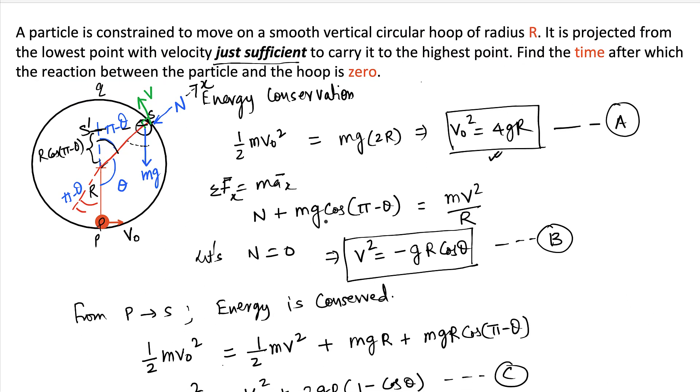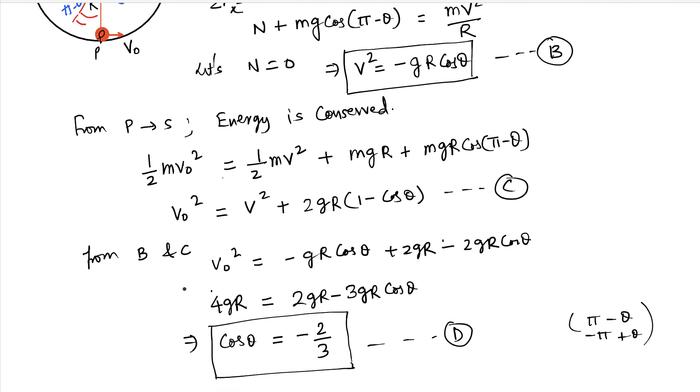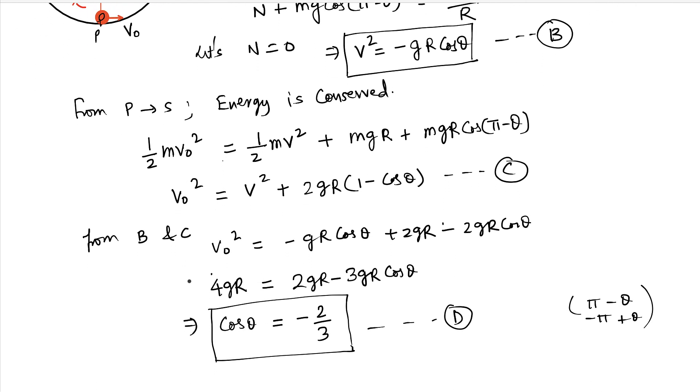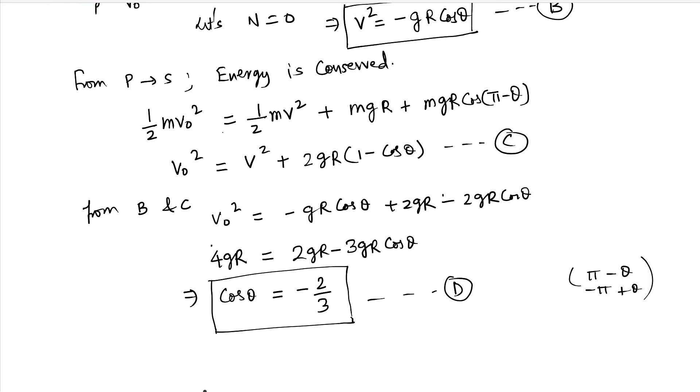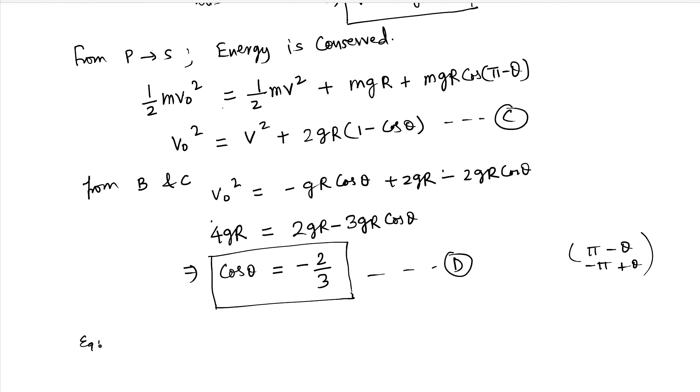So far so good. But our job is to compute the time it takes to go from P to S. So how do we do that? If you take equation C, it says that V square is equal to V0 square minus 2gr(1 minus cos theta).